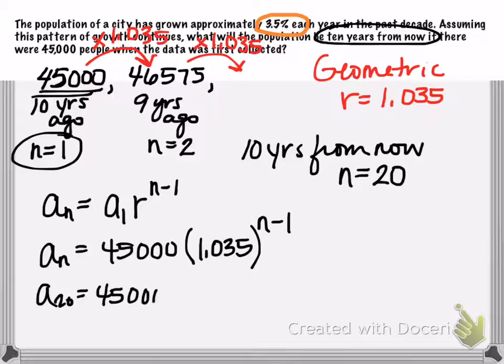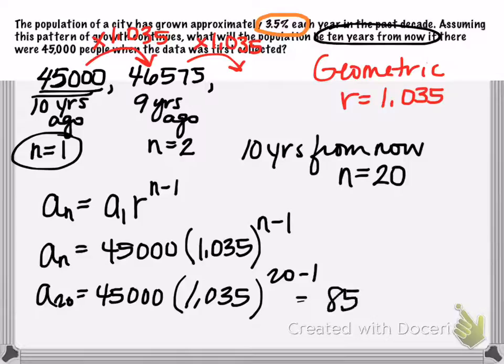So a sub 20 is equal to 45,000 times 1.035 raised to the 20 minus 1 power. And yes, of course you can use your calculator. And we're going to get 85,000, excuse me, 86,000... 86,512.56.